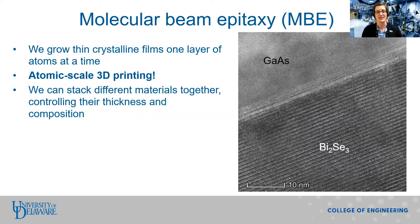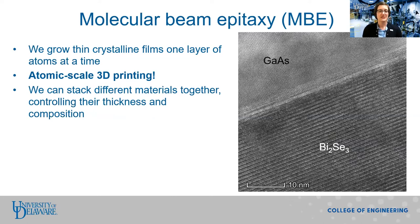Since we're building the film one layer at a time, we can stack different layers of materials together while precisely controlling the thickness and composition of each layer. In this way, we can create designer materials one atomic layer at a time. In the figure on the right, you can see a transmission electron microscopy image of a film grown by MBE — a bismuth selenide film grown on a gallium arsenide substrate. Each layer of atoms is clearly visible, and you can see the sharp interface between the bismuth selenide layer and the gallium arsenide layer.